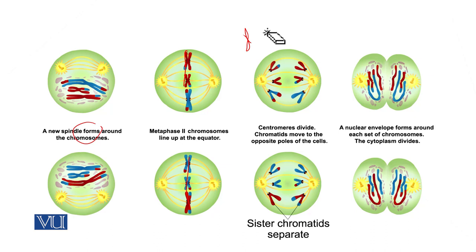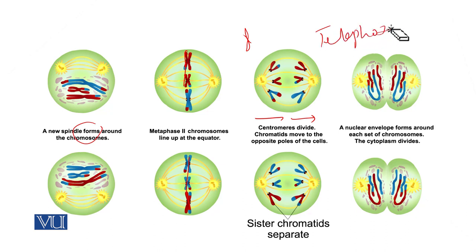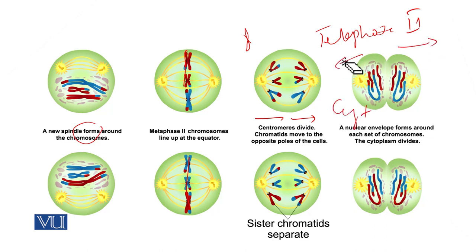The chromosomes have now moved to the opposite poles. In the last stage, telophase 2, cytokinesis occurs and both daughter cells divide into two cells, producing half the number of chromosomes. The chromosomes are not duplicated again because after meiosis 1 there is no replication, which is why the chromosomes are halved at the end.